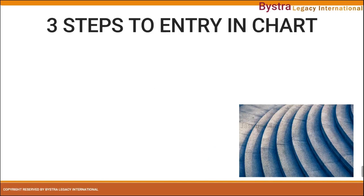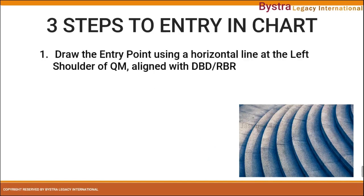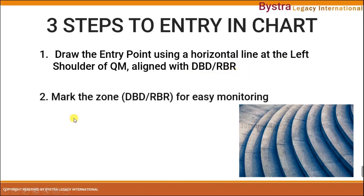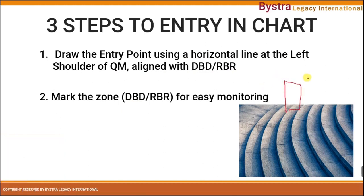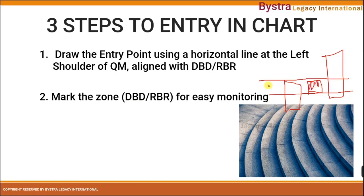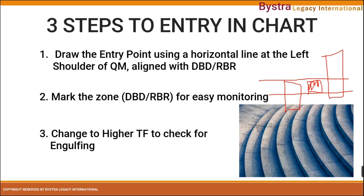There are three steps to entry on the chart for QM manipulation. First, draw the entry point using a horizontal line at the left shoulder, which must be aligned with the drop base drop or the rally base rally. Second, mark the zone — for example, if there's a bearish candle, then a bullish candle, then a bearish candle, we mark the zone of the base. Third, if the setup doesn't have an engulfing candle on the higher time frame, it is considered very high risk. When there is no confirmation, do not enter the trade.